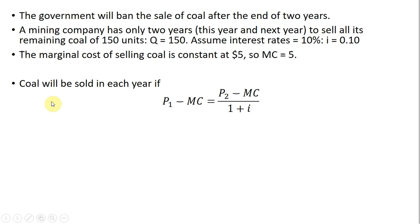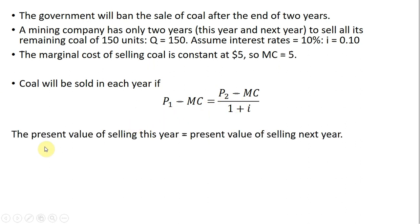Coal will be sold in each year if the following condition holds: P subscript 1 is the price this year, P subscript 2 is the price next year. The present value of selling this year — the left-hand side — equals the present value of selling next year. That's the price next year minus marginal cost, discounted back one period, where 1 plus I is the discount factor.